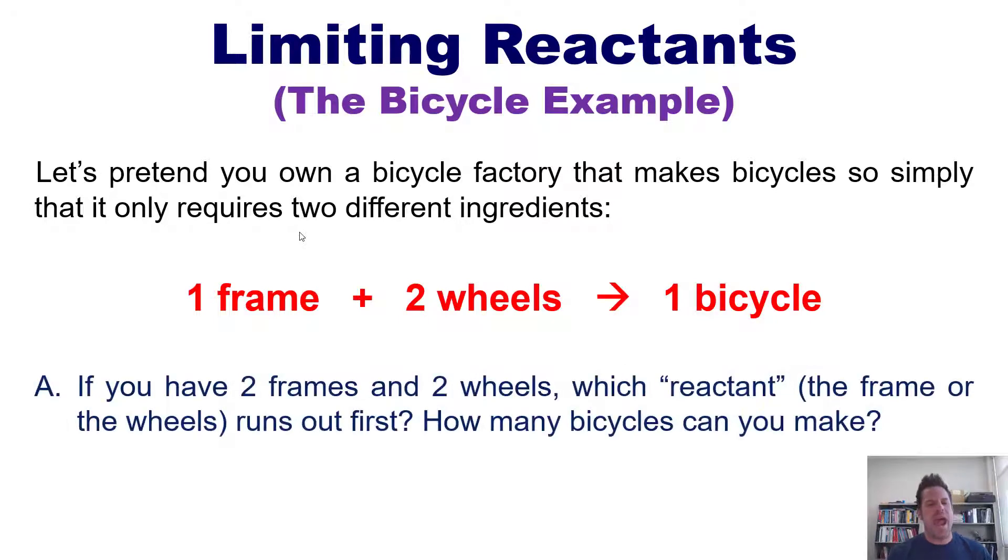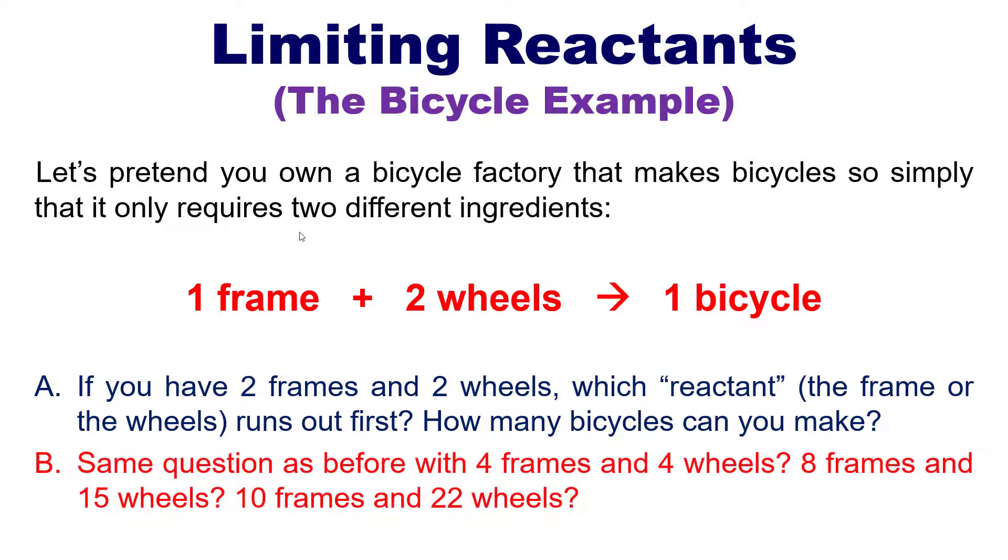If you have two frames and two wheels, that's all you have, which reactant, the frame or the wheels, runs out first and how many bicycles can you make? By extension, same question as before except with four frames and four wheels. And after that, what would happen if you had eight frames and 15 wheels? Or ten frames and 22 wheels?